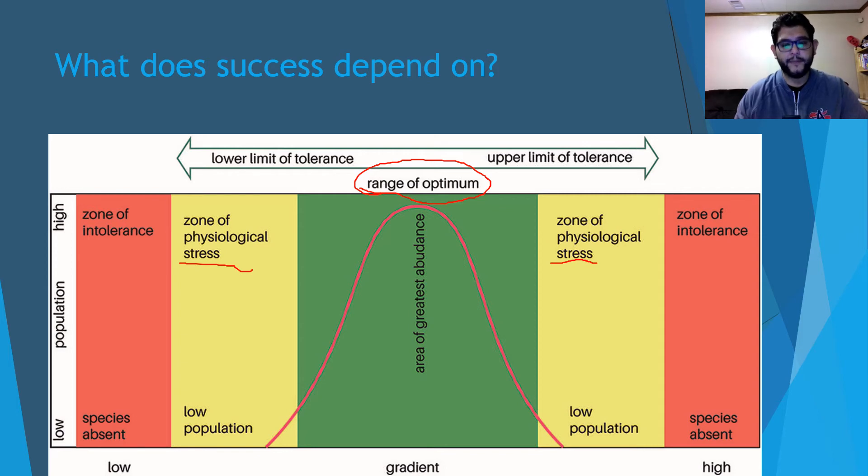Then over here you have the zones of intolerance, and those zones are where the population just cannot do well at all. They either die or are very stressed where they won't live very long at all. So success depends on this range and how wide or how narrow it can be.